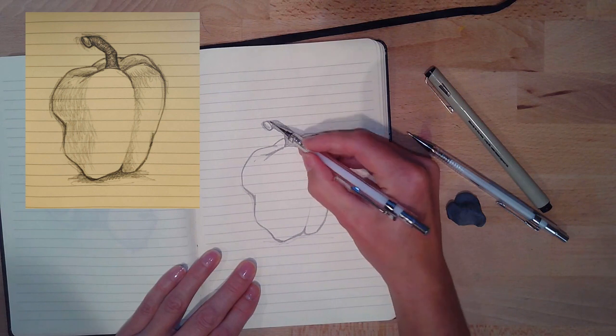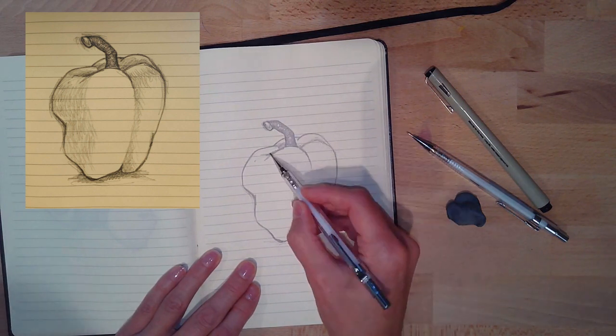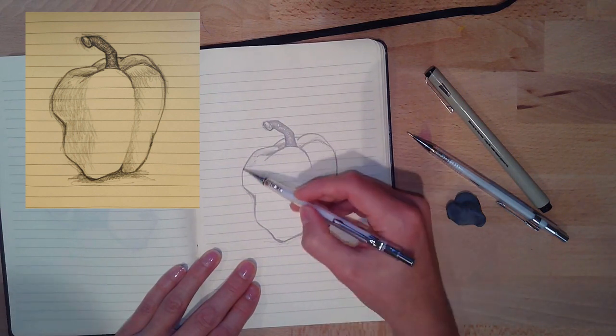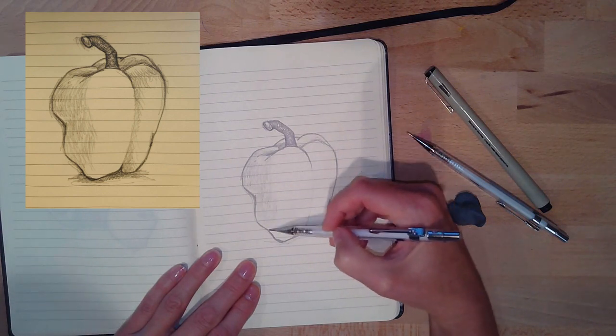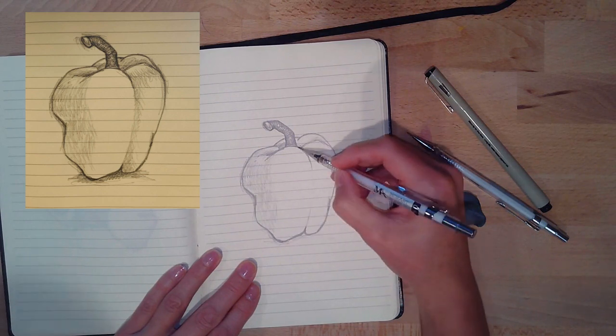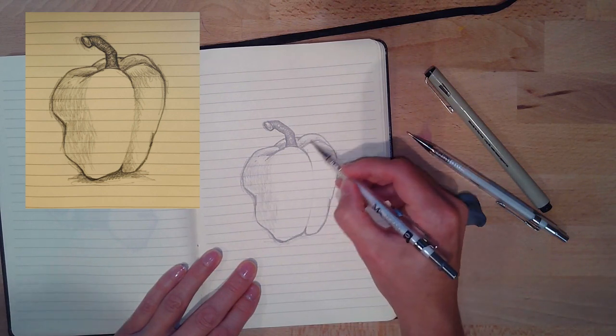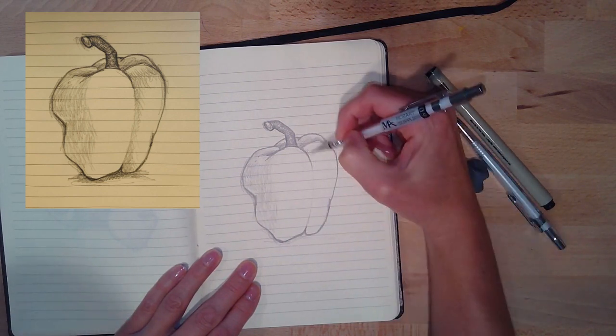What I tried to do is more of a hatching style. On my previous line drawing, I used a mechanical pencil that was a 0.7 lead, and then when I'm shading I used a 0.9.